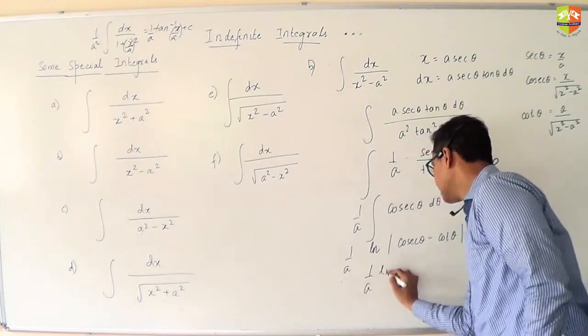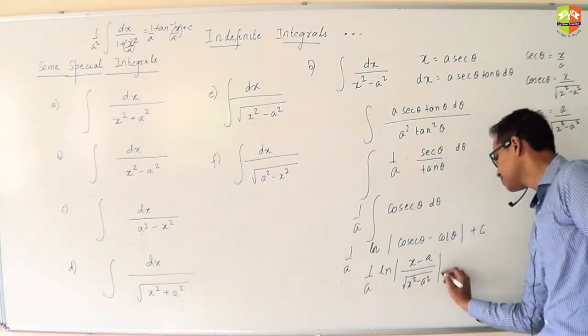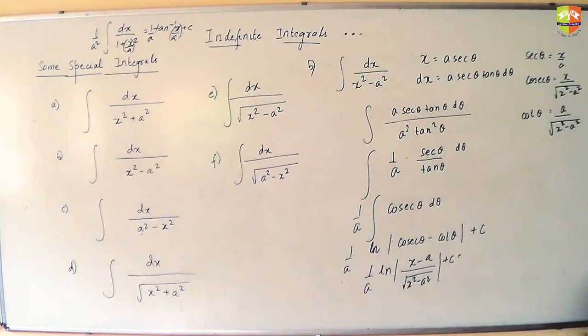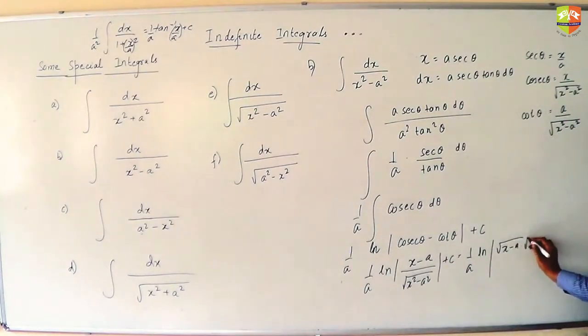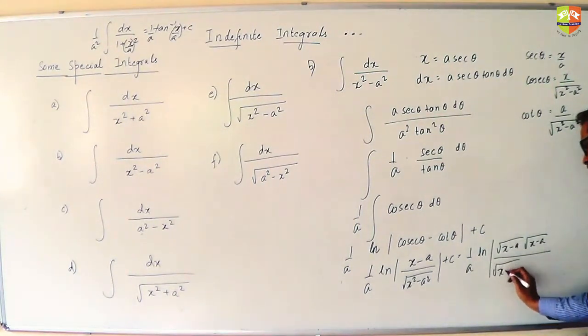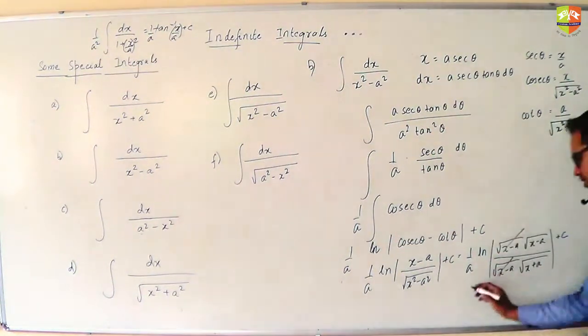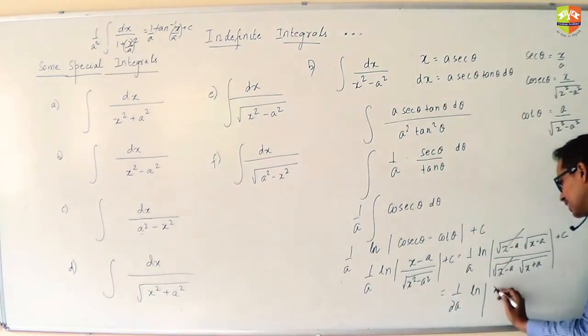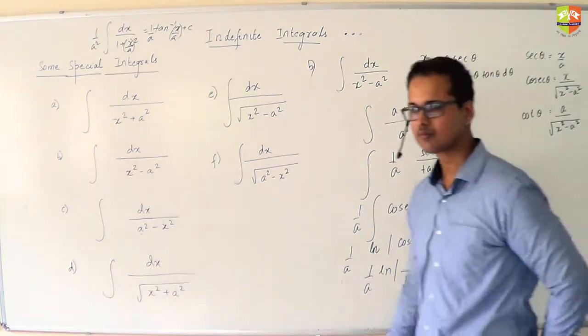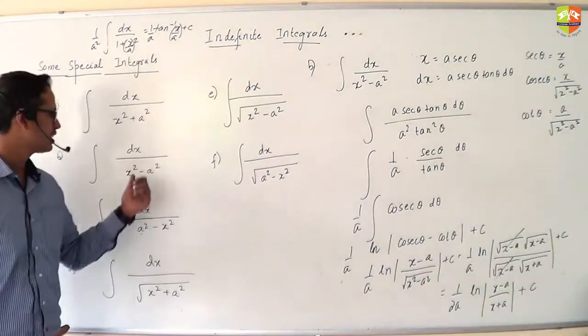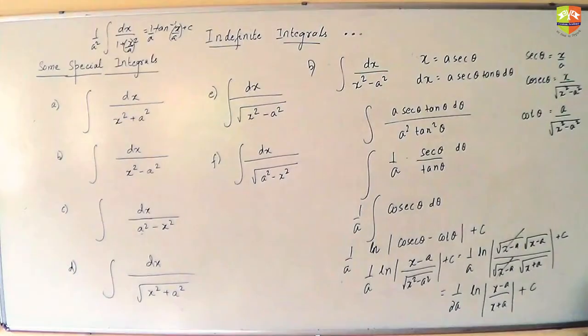So when I substitute it here, I get ln mod. Since the denominators are same, can I write it as x minus root x squared minus a squared over a. Now, if I write the x minus a term on top as root of x minus a times root of x minus a and in the denominator as root of x minus a times root of x plus a, these two terms will get cancelled. Half power can be taken outside. So your expression would convert to 1 by 2a ln x minus a by x plus a.